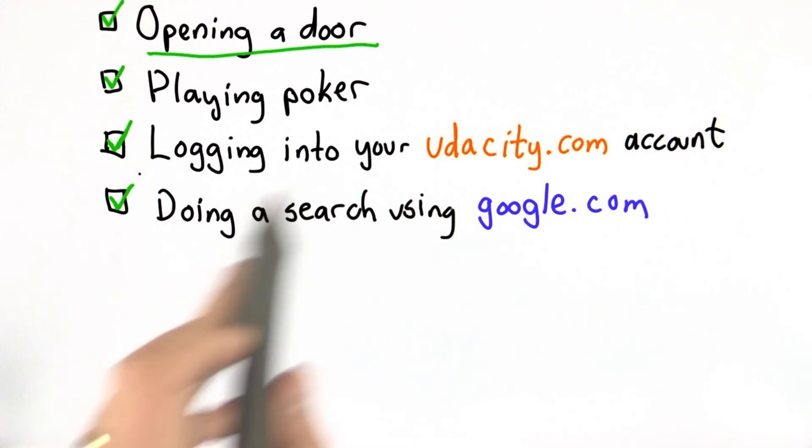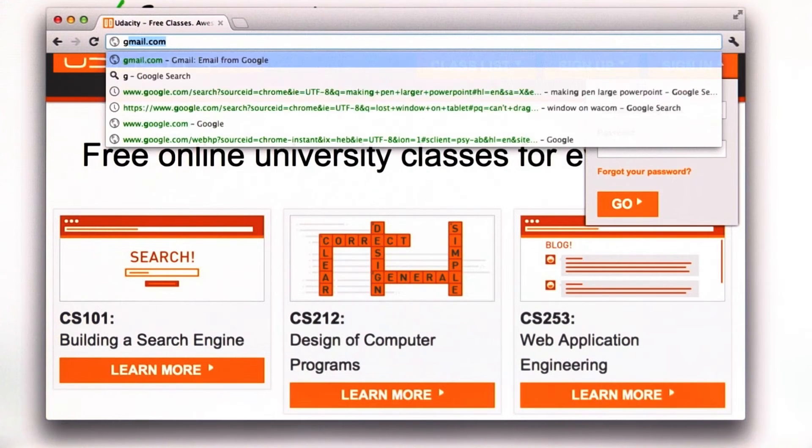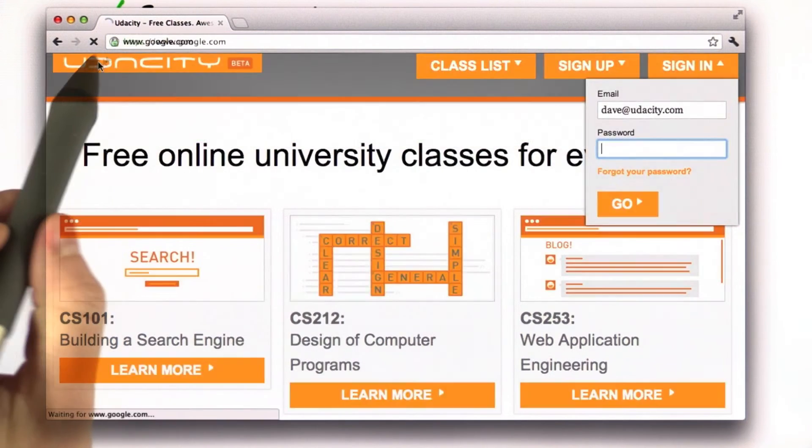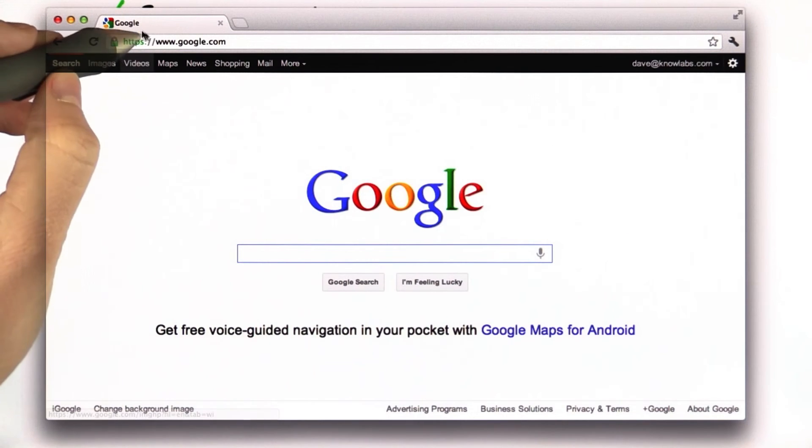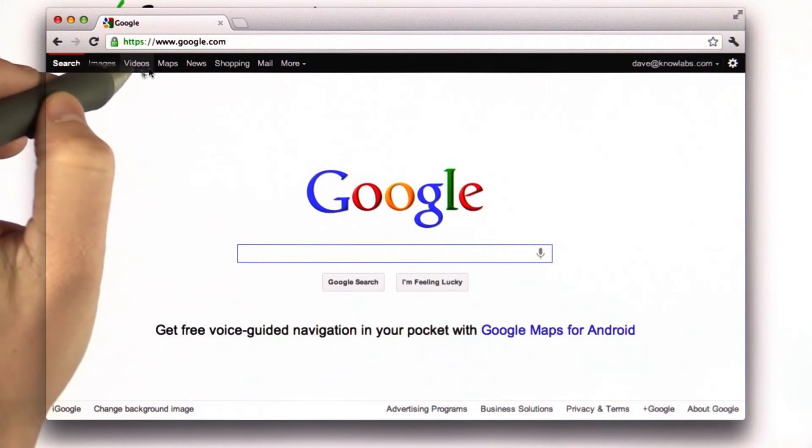The final option, doing a search using google.com, is an interesting one. This actually changed about a year ago whether or not that involves encryption. If you try it today, you'll note when you enter google.com, what happens is you actually get redirected to https google.com, and you can see the lock in the browser.